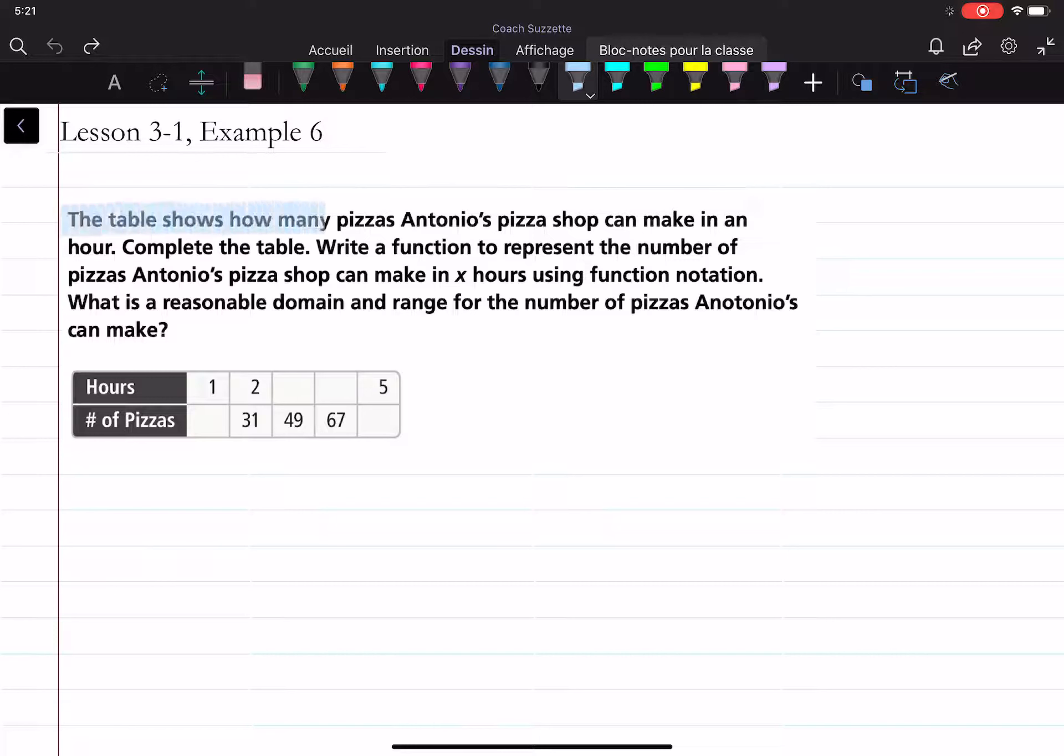We are given the table shows how many pizzas Antonio's Pizza Shop can make in an hour. Complete the table. Write a function to represent the number of pizzas Antonio's Pizza Shop can make in x hours using function notation. What is a reasonable domain and range for the number of pizzas Antonio's can make?